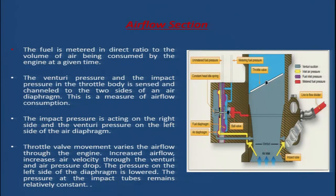The fuel is metered in direct ratio to the volume of air being consumed by the engine at a given time. The venturi pressure and the impact pressure in the throttle body are sensed and channeled to the two sides of the air diaphragm — impact pressure on the right side and venturi pressure on the left — creating a pressure differential called the air metering force.